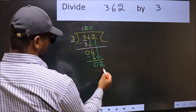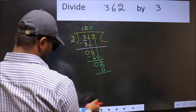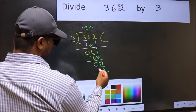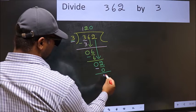So, 3 into 0 is 0. Now you should subtract: 2 minus 0 equals 2.